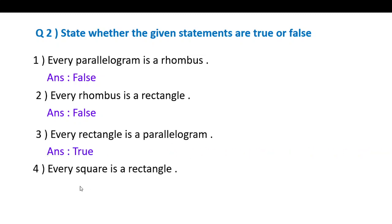Fourth statement: Every square is a rectangle. A square has all angles as right angles, and the opposite sides are congruent. Therefore this statement is true.